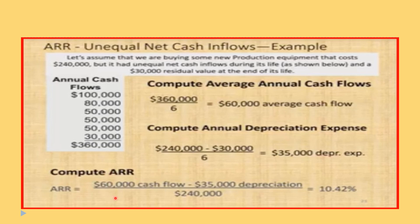To compute the ARR: we have 60,000 in average cash flows. We subtract the depreciation of 35,000 to get the average annual operating income. Dividing by the initial investment of 240,000 and multiplying by 100 gives us 10.42%. This will then be compared with the company's expected or required rate of return.